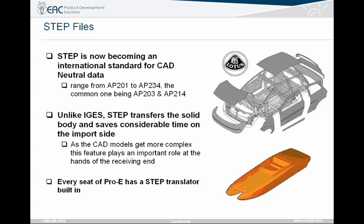Another common question is comparing STEP to iGIS. There are some times where iGIS files come across a little bit cleaner, just due to the file format or accuracy of that model. But typically STEP has a great advantage over iGIS because STEP is the solid body of the component — the actual surfaces that make up the part — as opposed to iGIS, which generates surfaces off of almost a wireframe. Also, every seat of Pro Engineer has a STEP translator built in. You don't need a new package or upgrade; this comes with Pro Engineer.